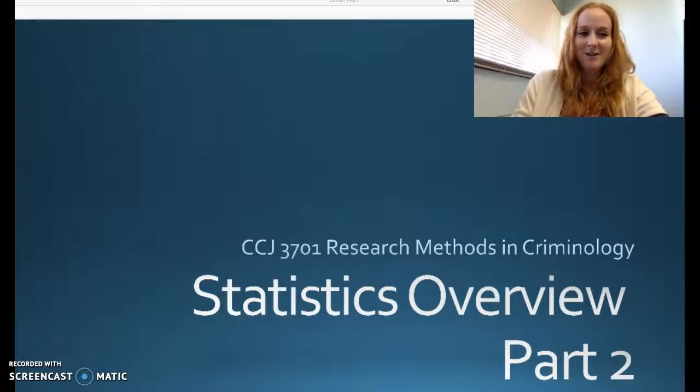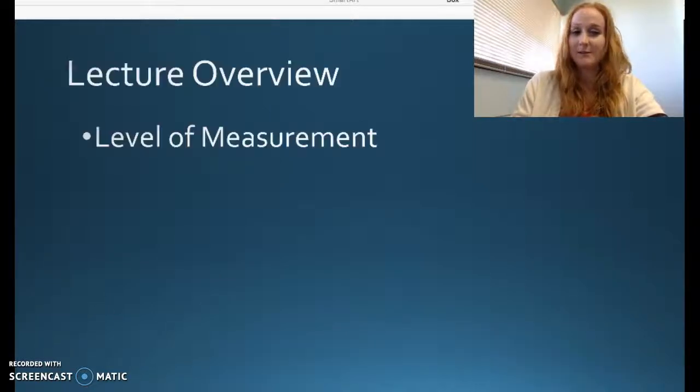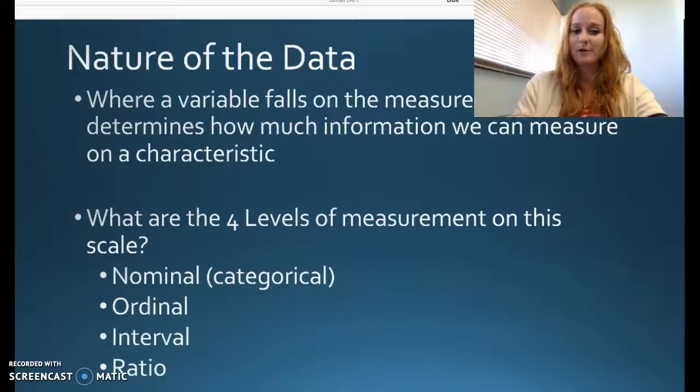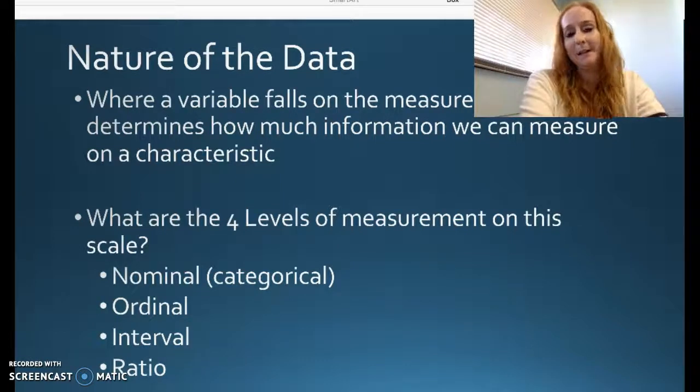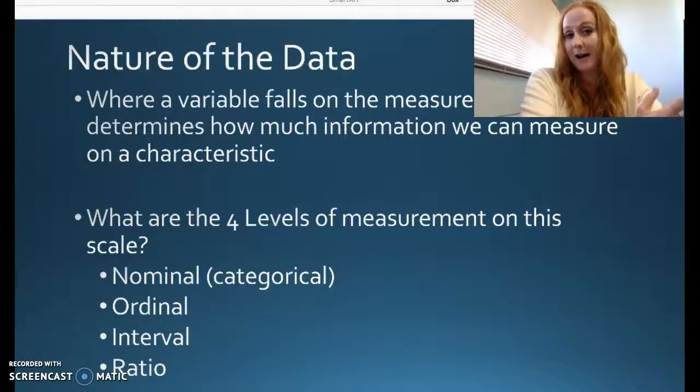As you may recall, we left off with level of measurement, talking about nominal, ordinal, and interval ratio data, and looking at where a variable falls and how much measurable information we get out of it. Remember from the last lecture we talked about pot smoking and how we could ask about that topic in a lot of ways. And depending on the way we ask about it, we would be able to get more or less information.